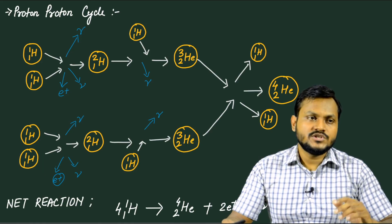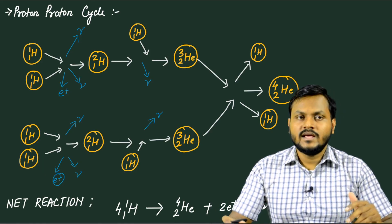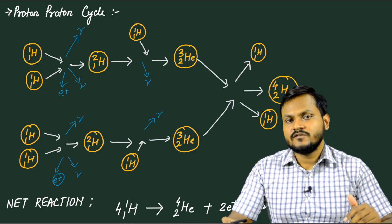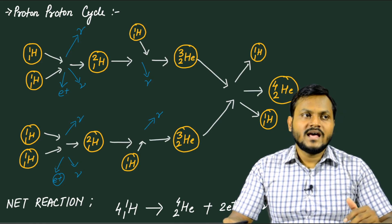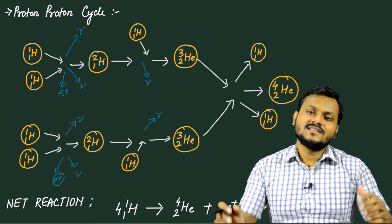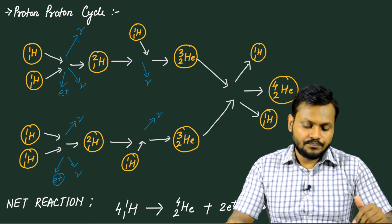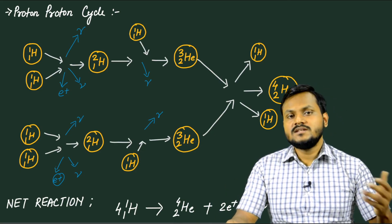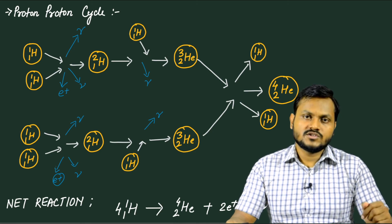So the proton-proton cycle and the carbon-nitrogen-oxygen cycle are two very common nuclear fusion cycles which occur in different kinds of stars, acting as the source of energy in those stars. That's it for today — thank you very much.